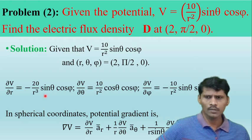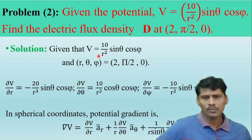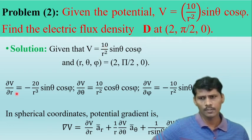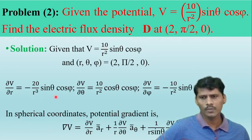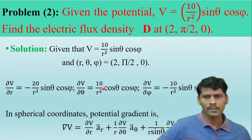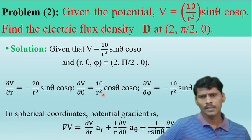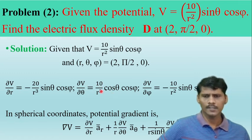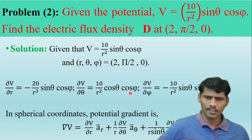With sinθ·cosφ as constant, the differentiation of 1/R² gives −2/R³, so ∂V/∂R = −20/R³·sinθ·cosφ. Differentiating V with respect to θ, with R and φ as constants, the derivative of sinθ is cosθ, giving ∂V/∂θ = 10/R²·cosθ·cosφ.